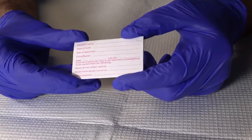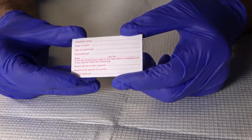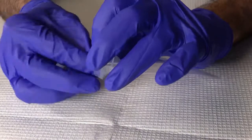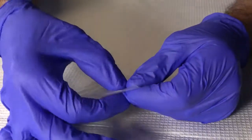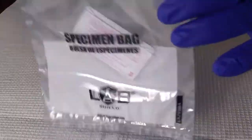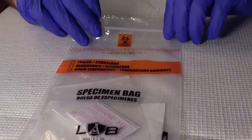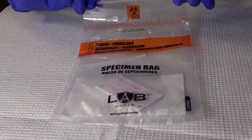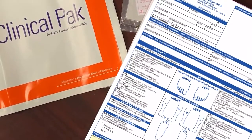Now place the resealable plastic bag inside the biohazard bag and seal. Fold the completed requisition form and place it in the outside pocket of the biohazard bag.